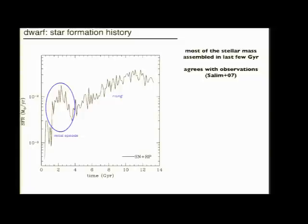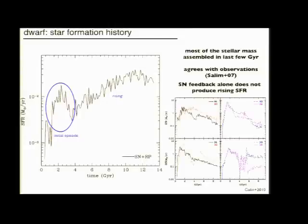This agrees in absolute value with observations and it also shows the downsizing trend that has been observed, for example by Salim and others. This is in contrast to the results of most cosmological simulations which show declining star formation histories. This is a plot by Pedro Colina and others with different implementations of feedback and star formation.